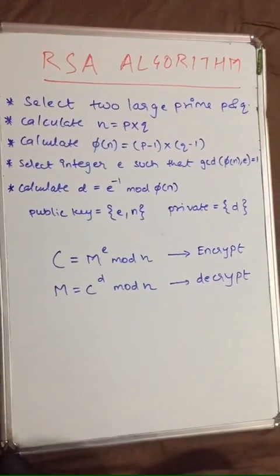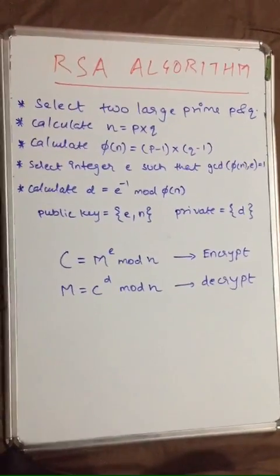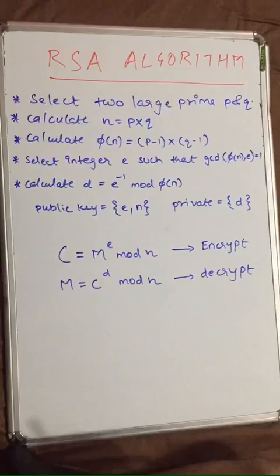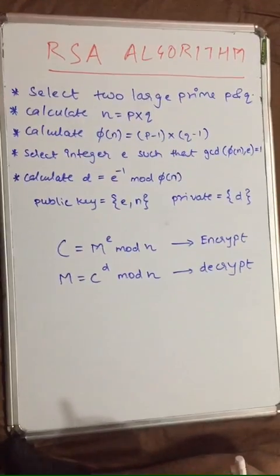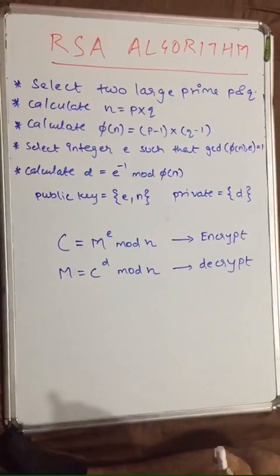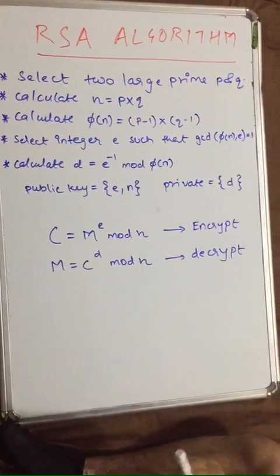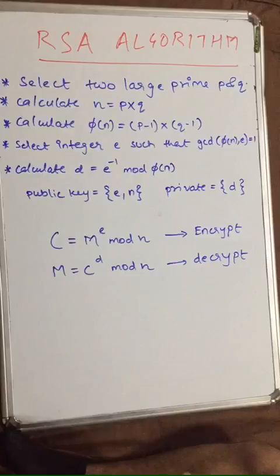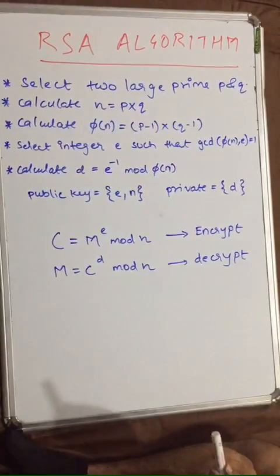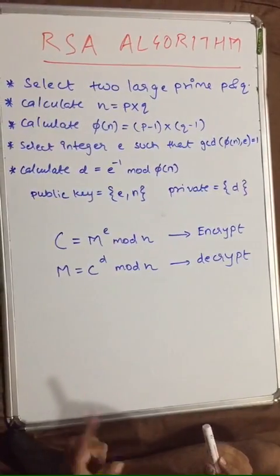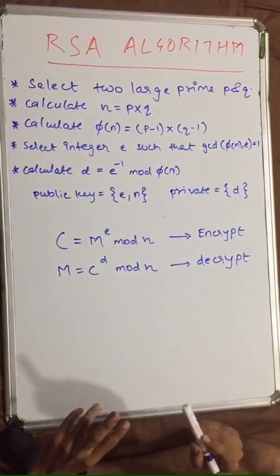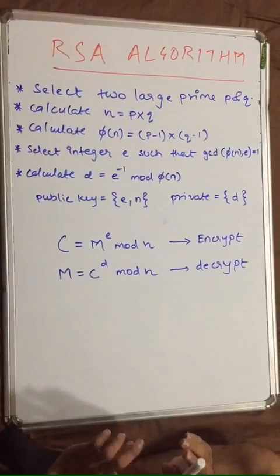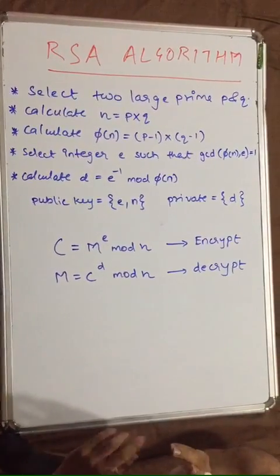Step number 3: calculate phi(n), which will be equal to (P minus 1) times (Q minus 1). This is Euler's formula. Now select integer e such that the GCD of phi(n) and e should be equal to 1 — so they should be relatively prime numbers.